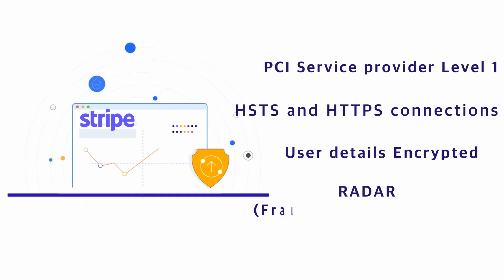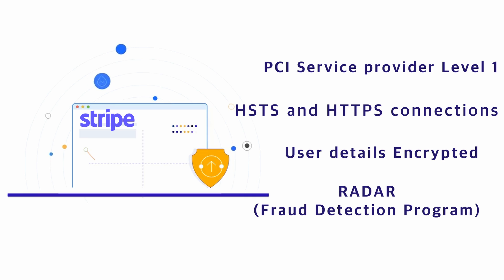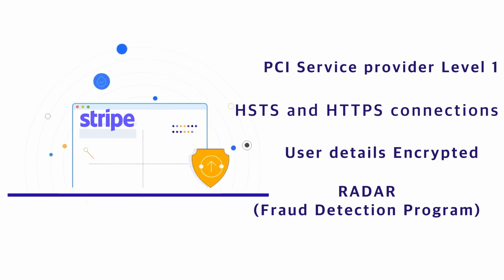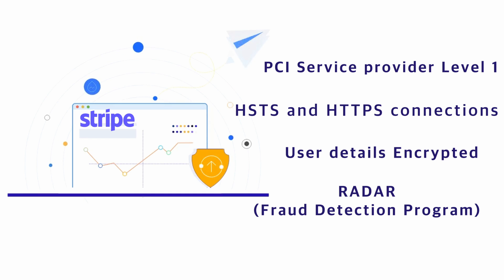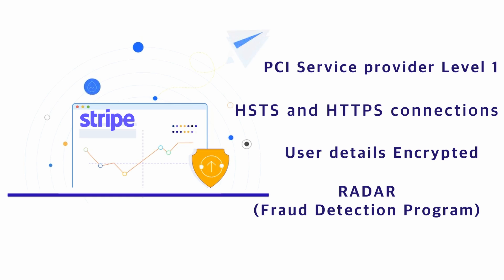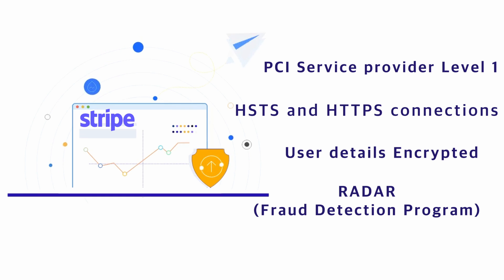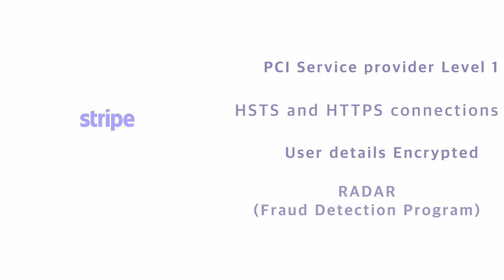Stripe went above and beyond by introducing Radar, a tool that uses machine learning for fraud prevention. It sits in the background and scans all the payments happening across Stripe's network. The aim is to detect risky transactions using data and signals and block fraud before it even reaches a merchant's platform. Radar has reportedly blocked billions of dollars of fraud since 2016.